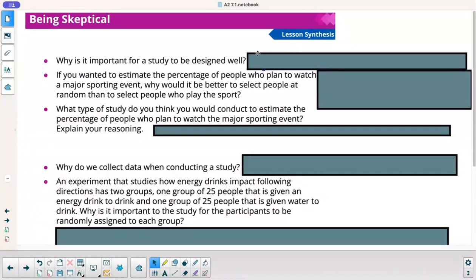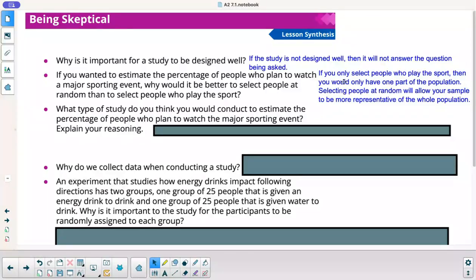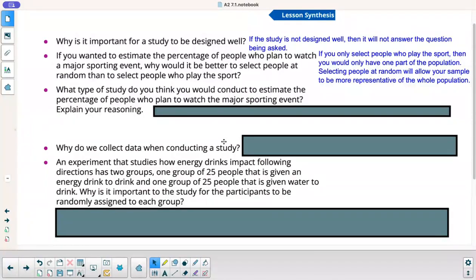All right. So, lesson synthesis. Why is it important for a study to be designed well? Well, obviously, if the study is not designed well, then it will not answer the question being asked. It could also provide misleading data that is not accurate. All right. Next one. If you wanted to estimate the percentage of people who plan to watch a major sporting event, why would it be better to select people at random than select people who play the sport? Well, obviously, if you only select football players and you ask how many people are going to watch a football game, they're probably more likely to watch it because they're interested in it. So, if you only select people who play the sport, then you would only have one part of the population. Selecting people at random will allow your sample to be more representative of the whole population. Always want random samples that will be much more accurate unless you're trying to focus on a specific group of people.